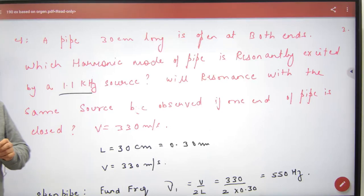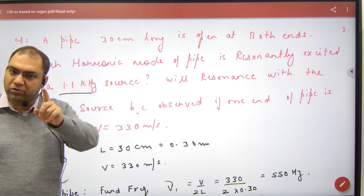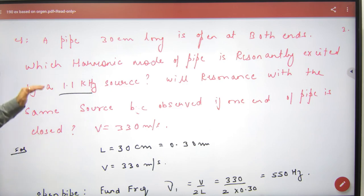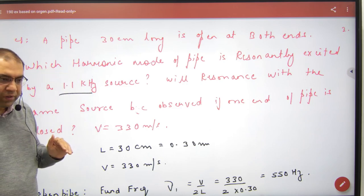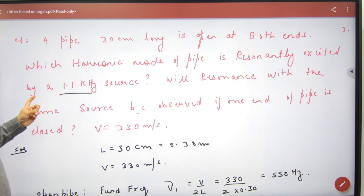A pipe 30 cm long, open at both ends. Which harmonic mode of vibration is resonantly excited by 1.1 kHz source?